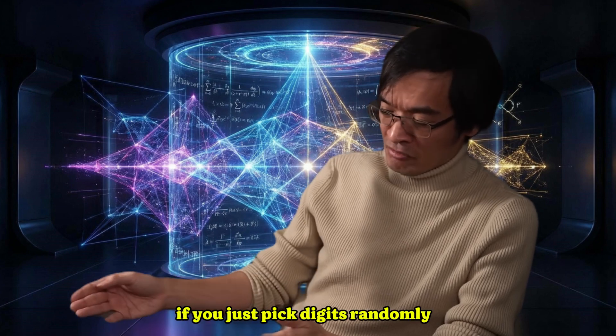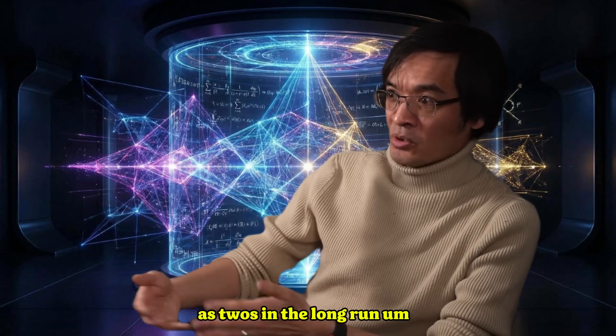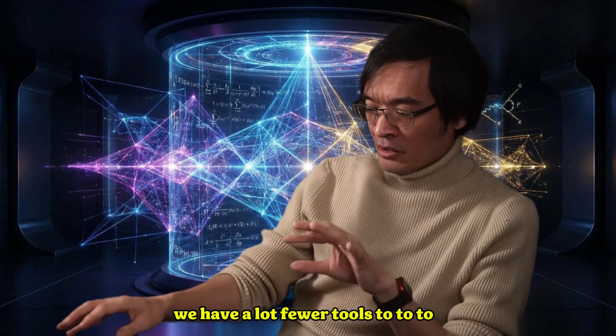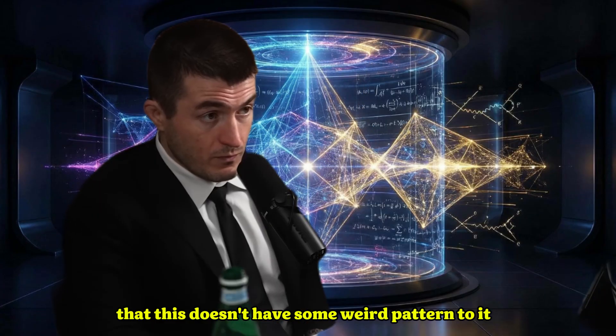So if you just pick digits randomly, there's something called the law of large numbers that tells you you're going to get as many ones as twos in the long run. But we have a lot fewer tools. If I give you a specific pattern like the digits of pi, how can I show that this doesn't have some weird pattern to it?